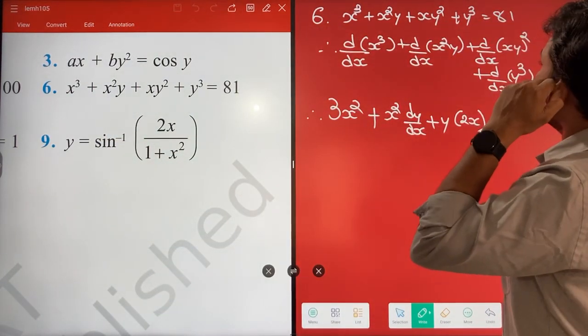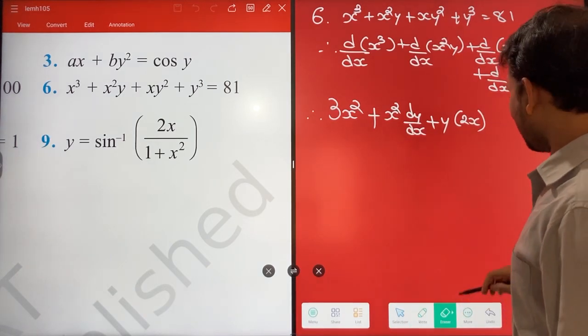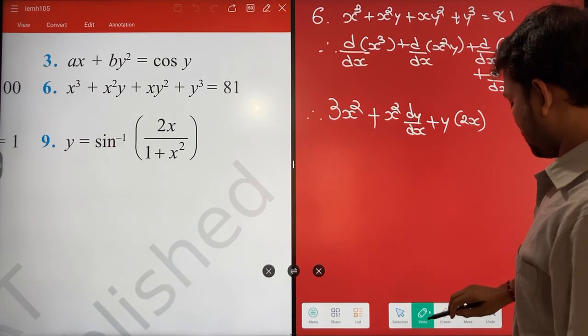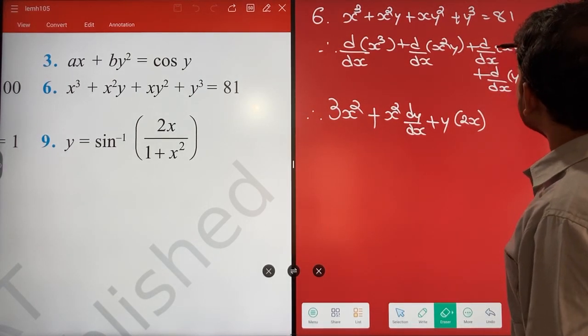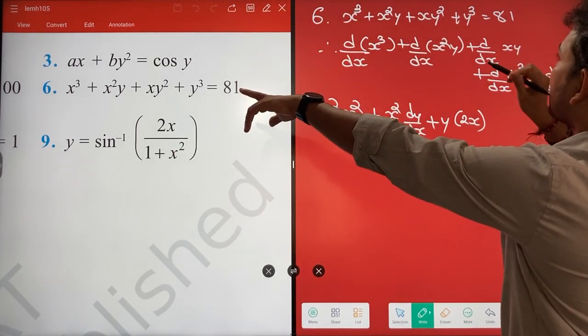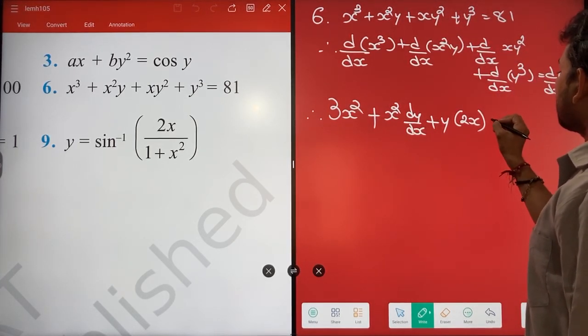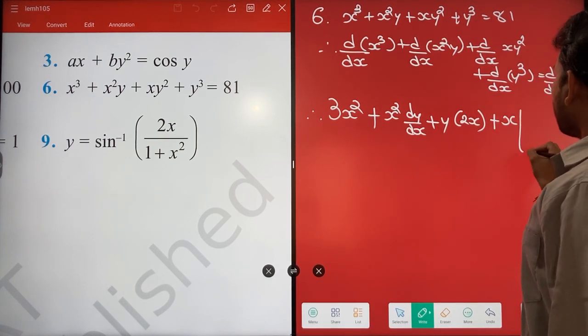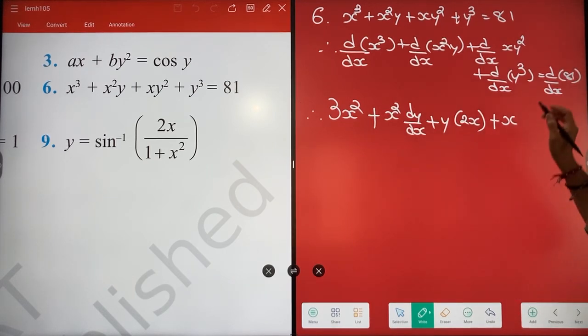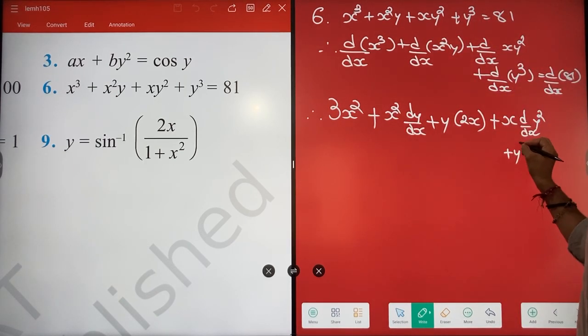XY square - yaha pe kya hai X, Y square, whole square nahi hai. Again u into v. X constant, Y square ka differentiation - main aisa likh deta hu, D by dx of Y square. X constant Y square ka differentiation plus Y square constant X ka differentiation, to dx by dx one ho jayega. Y square constant, dx by dx kya jayega? One.